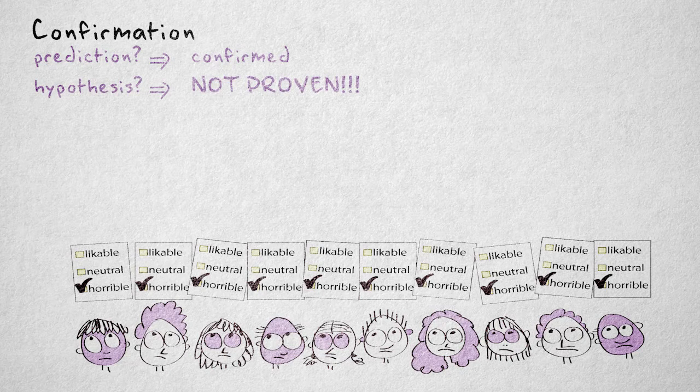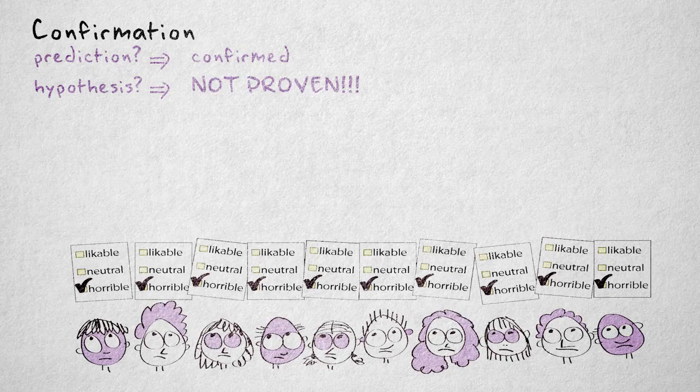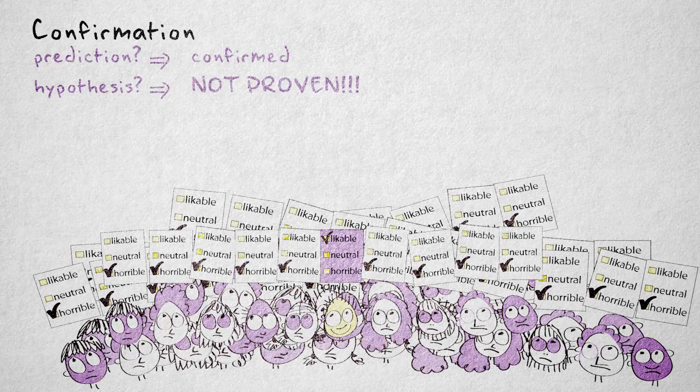It's easily conceivable that we will be proven wrong in the future. If we were to repeat the study, we might find a person that simply adores their mother-in-law. The point is that confirmation is never conclusive.